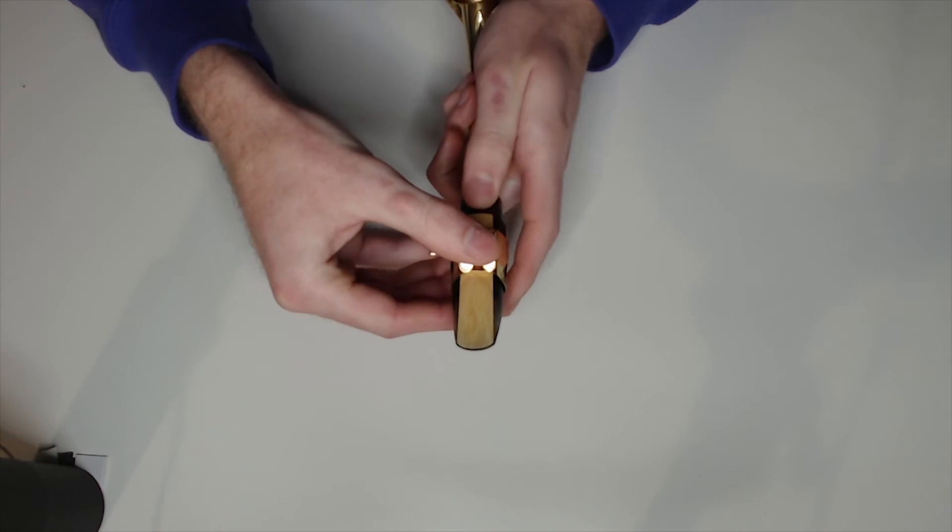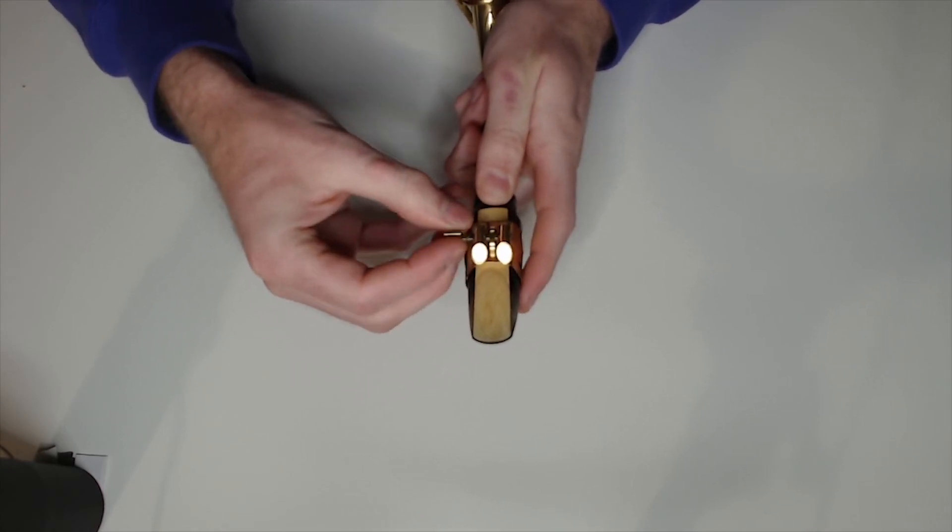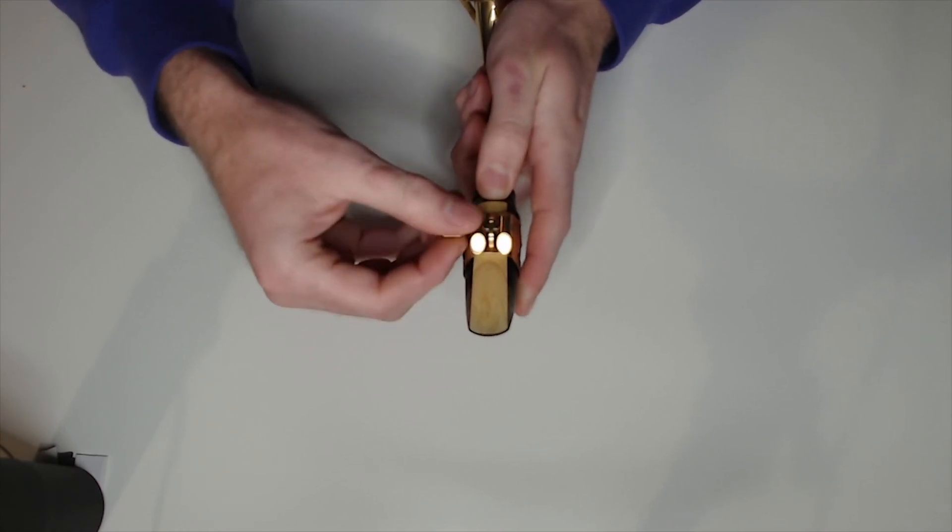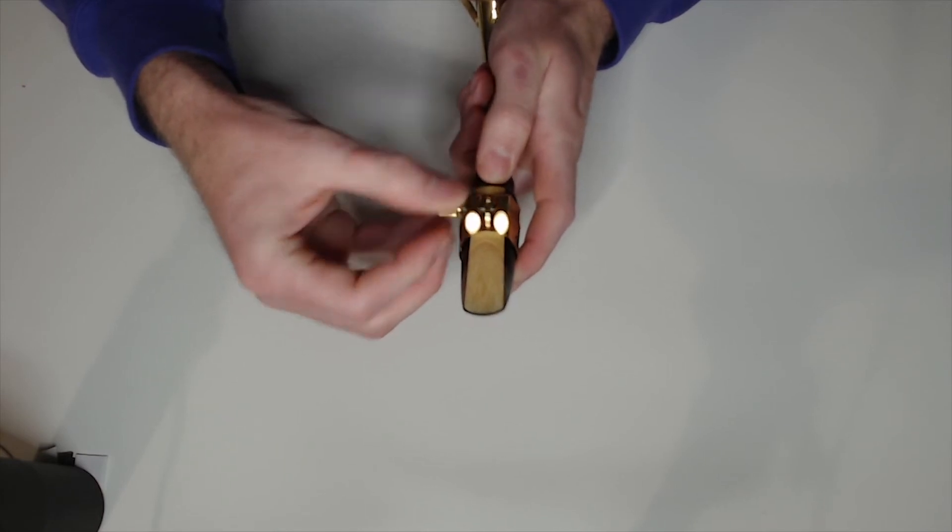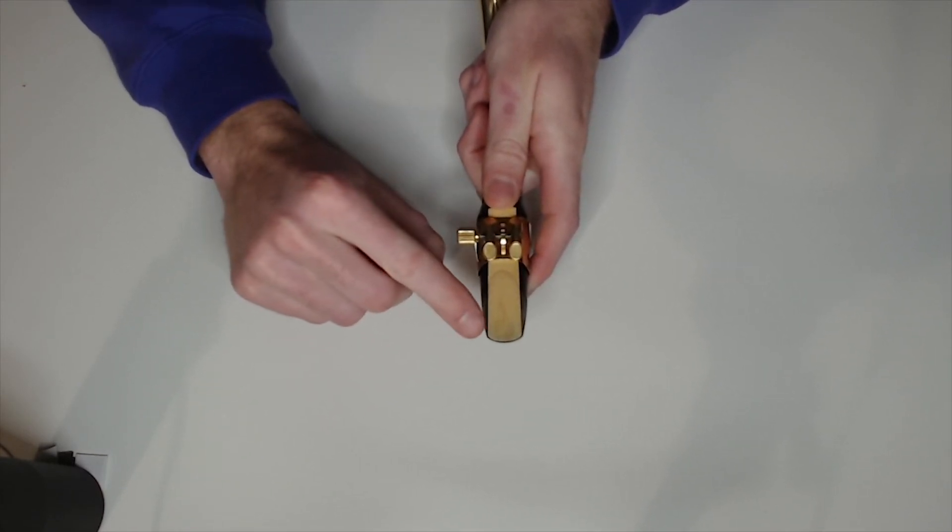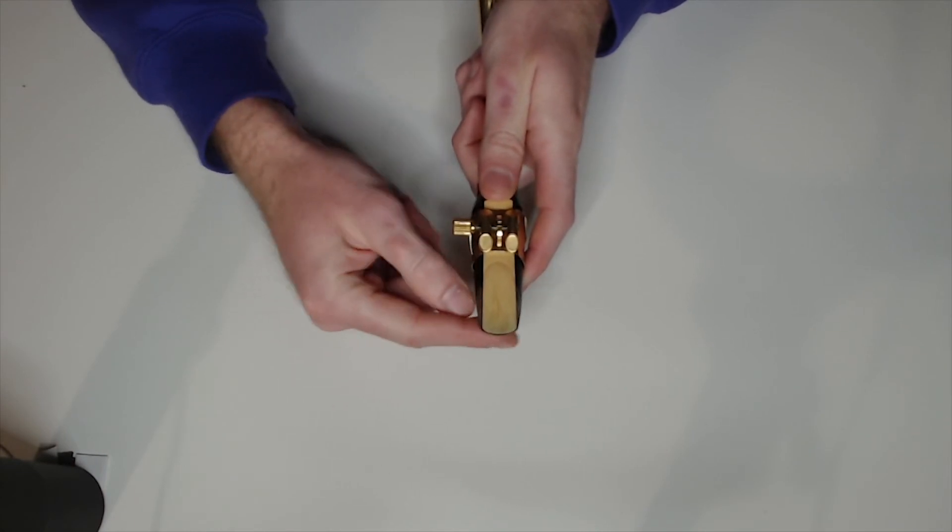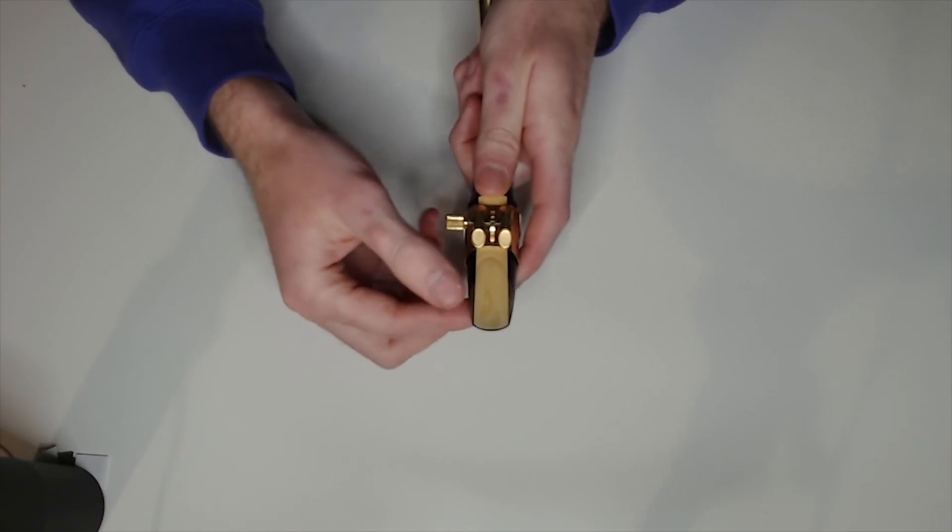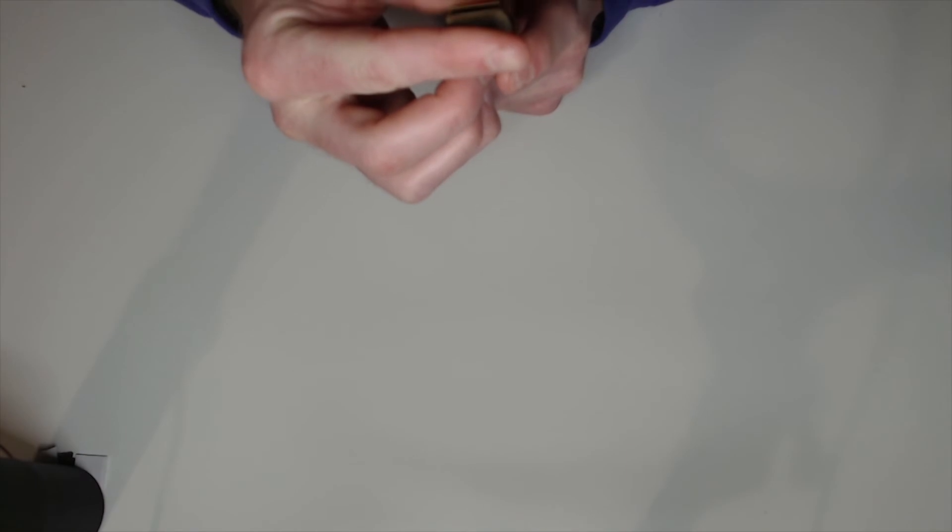Here I start to line the ligature up with the line that's on my mouthpiece. I also check to see if the tip of my reed is close to the tip of my mouthpiece. A good rule of thumb is to make sure you can see a little bit of the mouthpiece over the tip of the reed, just about a hair's width.